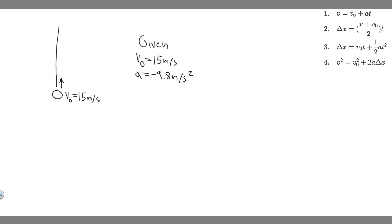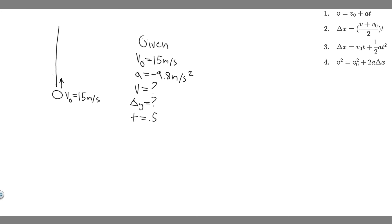So what we're trying to find is V and delta Y at different times. T is going to equal different values in each scenario: for A it's 0.5 seconds, for B it's 1 second, for C it's 1.5 seconds, and for D it's 2 seconds. The given variables stay constant — only the time changes. We're just going to solve it for each of these different times.